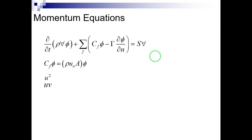The equations of momentum and continuity are coupled because each component of velocity appears in all equations. The third point is that pressure appears in the source expression in the momentum equations, which makes the equations more interdependent.